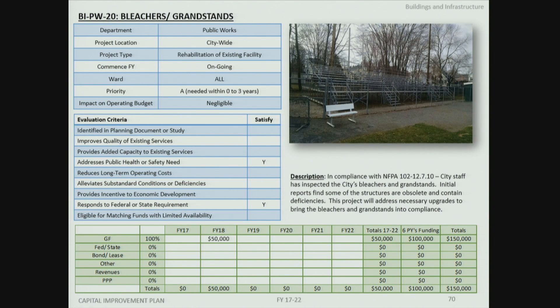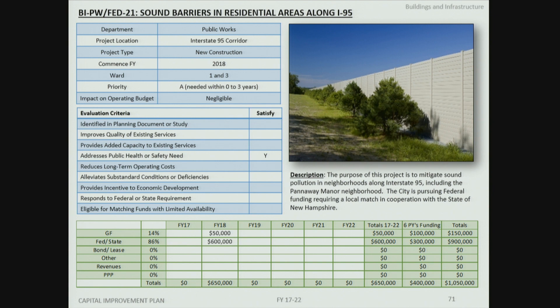Funding in an out year will continue replacement of grandstands and bleachers throughout the city. The sound barriers project addresses requests from neighborhoods along the Route 95 corridor; these projects must be done in conjunction with the DOT as part of larger highway projects. Staff is working with the DOT to explore whether barriers could be advanced separately from their projects — a previous commissioner had shown interest in this — but the new commissioner has not yet been approached, and staff will reach out in the near term.